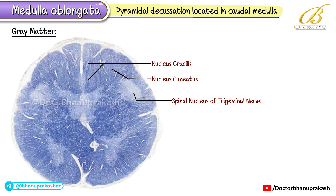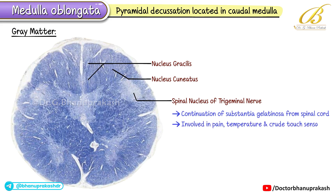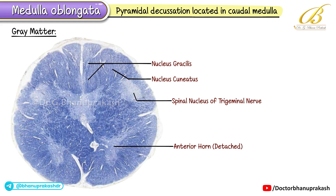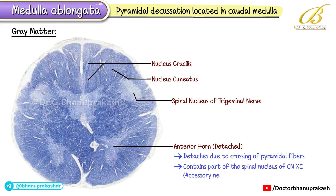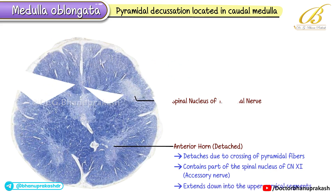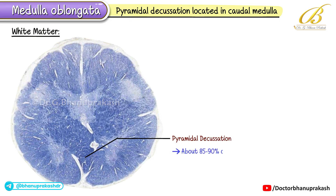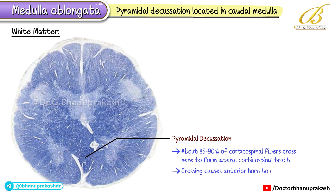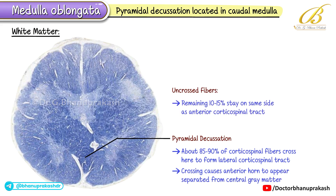The spinal nucleus of the trigeminal nerve is a continuation of the substantia gelatinosa from the spinal cord, involved in pain, temperature, and crude touch sensation from the face. The anterior horn appears detached here due to the crossing of pyramidal fibers, and it contains part of the spinal nucleus of CN11, the accessory nerve, extending down into the upper cervical segments. In the white matter, about 85–90% of corticospinal fibers cross at the pyramidal decussation to form the lateral corticospinal tract, while the remaining 10–15% stay on the same side as the anterior corticospinal tract.